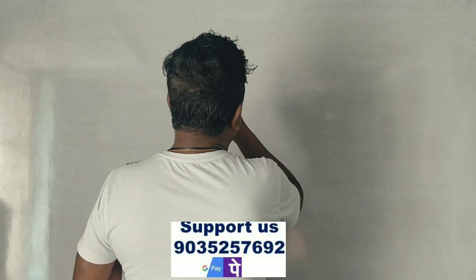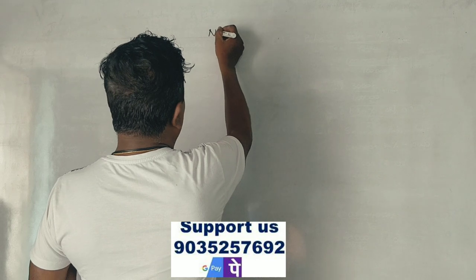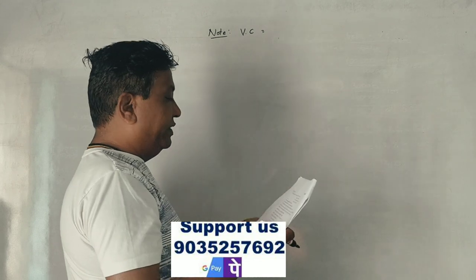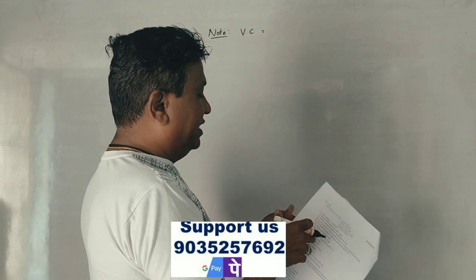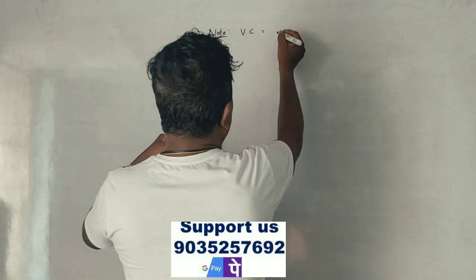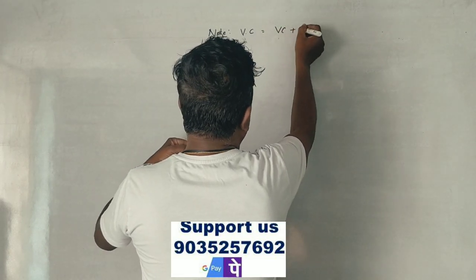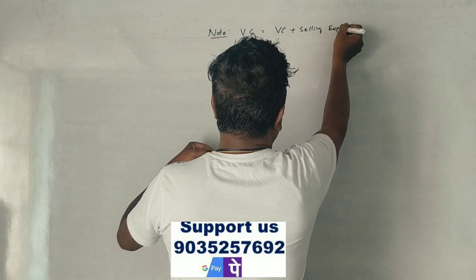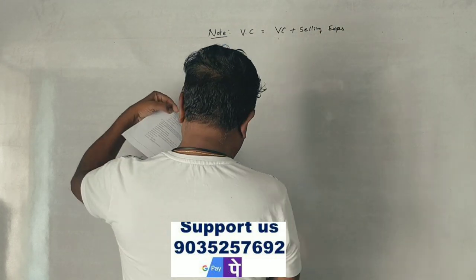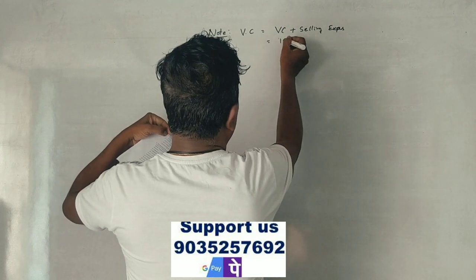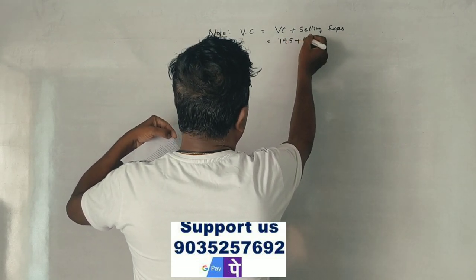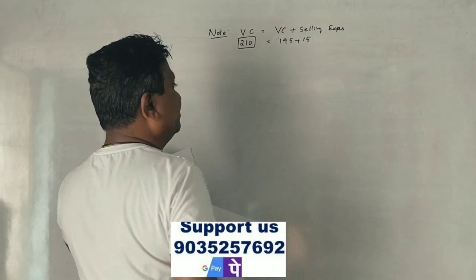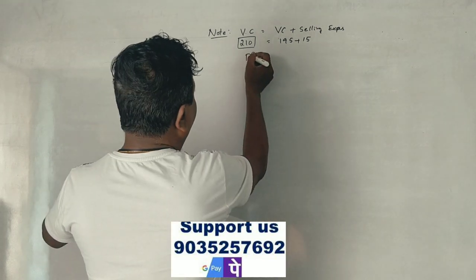Note on variable cost: variable cost per unit is the variable cost per pair plus selling expenses per pair. So variable cost is 195 rupees plus 15 rupees, which equals 210 rupees variable cost per pair.